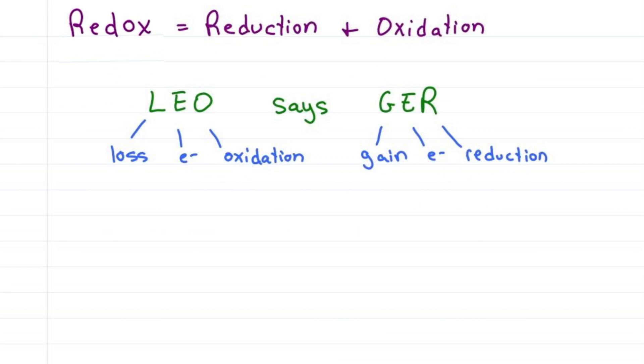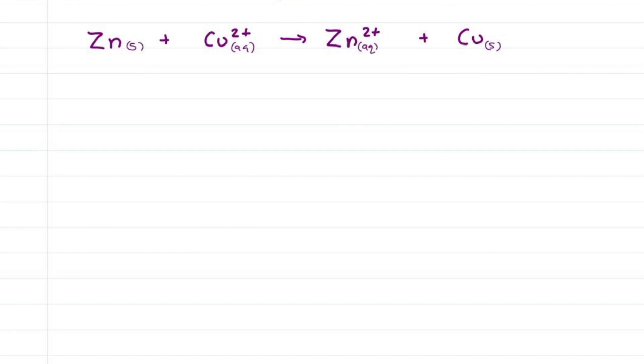Take the spontaneous reaction between zinc solid and copper ions. What is actually happening here? Let's break it up. For the zinc half reaction, zinc solid goes to Zn2+ which means we also get two electrons. This gives me a net charge of zero on either side.